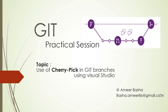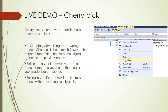Good morning everyone and welcome to this Get Practical session. This is Amir Basha. In this session I'm going to show you how to use cherry pick in Git branches using Visual Studio. In the previous sessions I explained how to integrate changes from feature branches to master branches using merge and rebase. Now I've often been asked by people how to merge only specific commits from one branch to another.